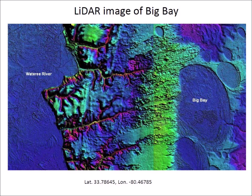Big Bay is located three kilometers north of Pinewood, South Carolina and eight kilometers east of the Wateree River floodplain. This LiDAR image shows the band of deposits over Big Bay and chevron dunes in several places. The band of deposits has been described as an aeolian sand sheet, but due to its proximity to the river, the sand sheet could be debris deposited by the wave of an impact on the Wateree River during the ice bombardment that formed the Carolina Bays.